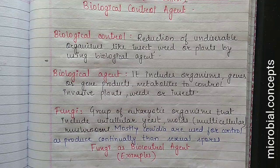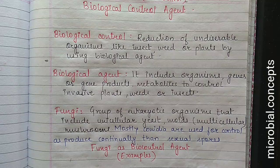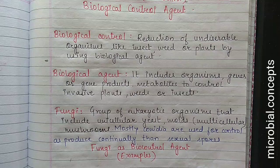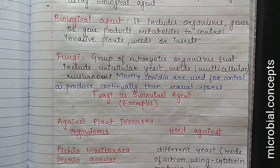Biocontrol means controlling undesirable organisms like insects, weeds, or plants by using a biological agent. Weeds are small plants which grow between your crop and compete for nutrition. A biological agent includes organisms, genes, gene products, or metabolites to control invasive plants, weeds, or insects. Here we are going to discuss about organisms — specifically fungi — used as a biological or biocontrol agent.